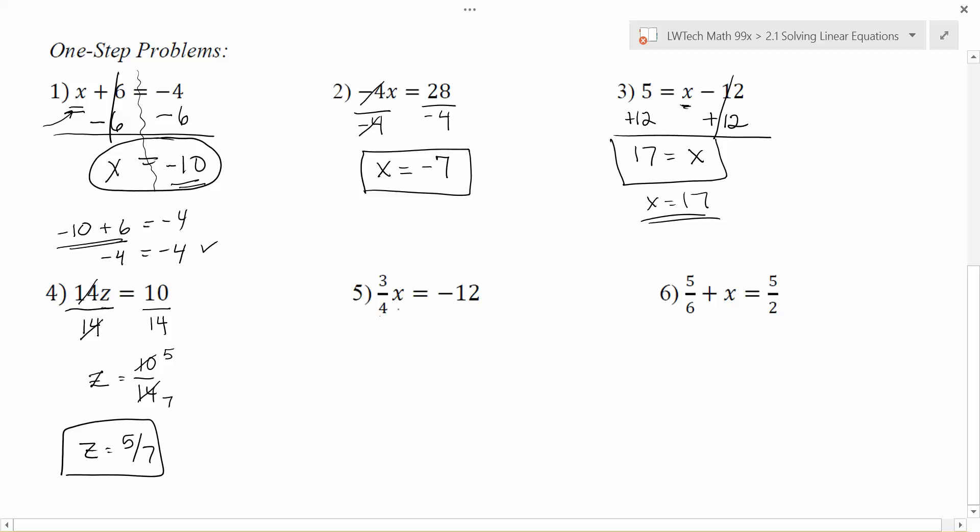With problem number five, we want to get the x by itself. It's currently being multiplied by 3/4. So to get rid of it, what we want to do is divide by 3/4. Now, when we divide both sides by 3/4, the 3/4 divided by 3/4 goes away and leaves me with x. But on this side, really what I have is -12 divided by 3/4. I'm dividing with fractions. So go ahead and make the first value into a fraction. We don't have rules for dividing with fractions, so we change it to multiply and we flip that fraction over. So we're multiplying by the reciprocal instead.